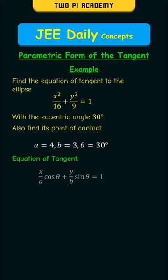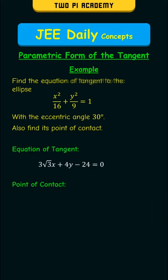By substituting them in the equation of the tangent, we get 3√3x plus 4y minus 24 equals to 0. And similarly, we get the point of contact as 2√3, 3 by 2.